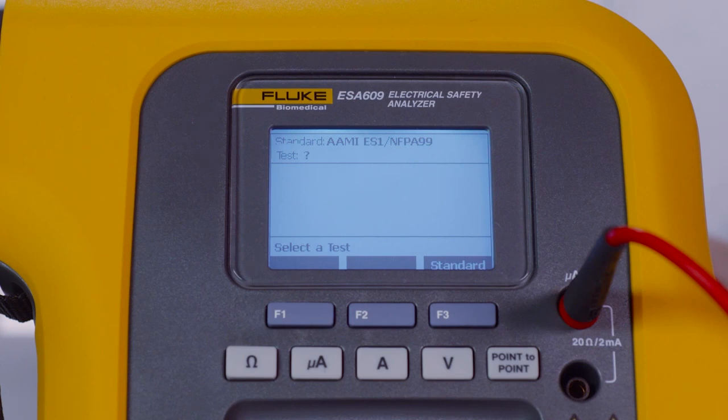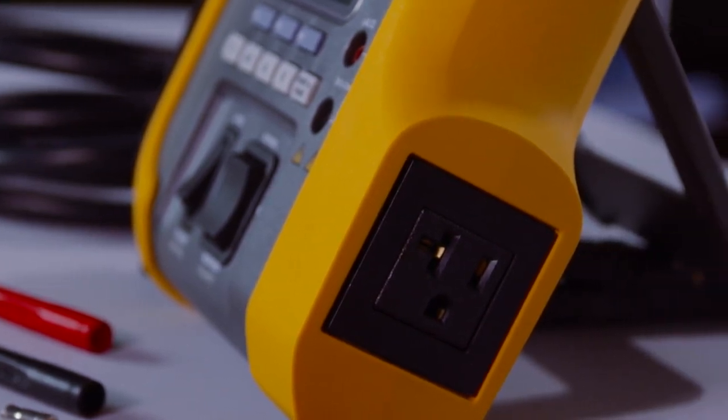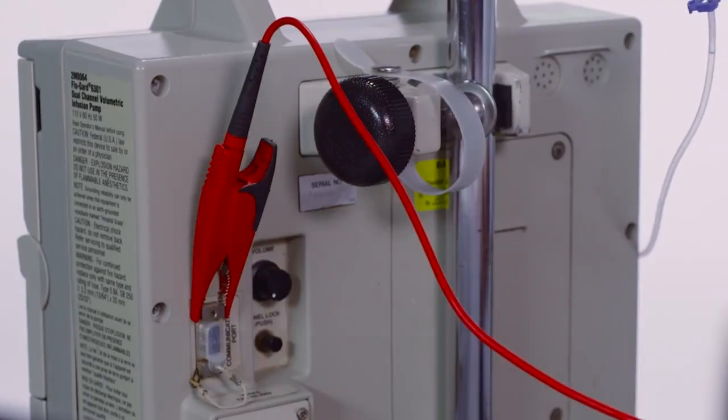Today we'll perform a chassis leak test on this infusion device. Next, plug the device under test into the ESA609 test receptacle. Connect the lead from the red jack to the device under test chassis test point.